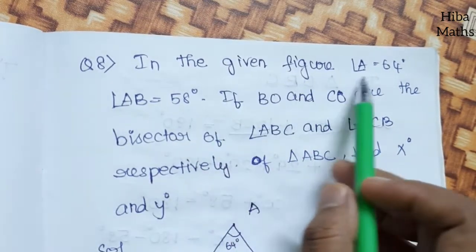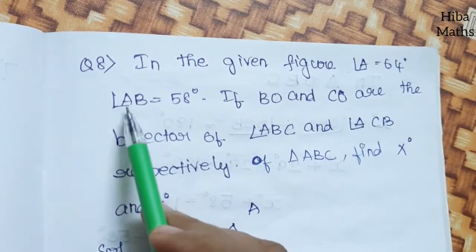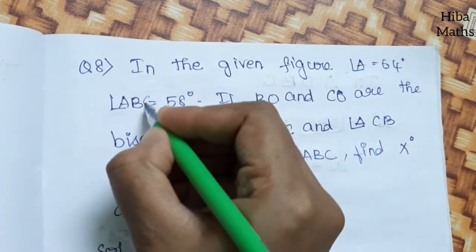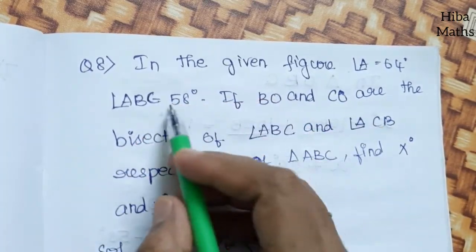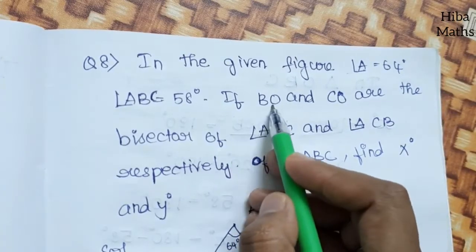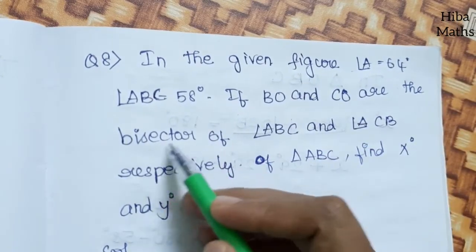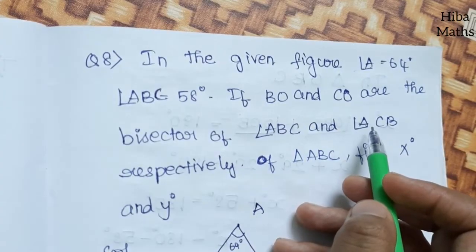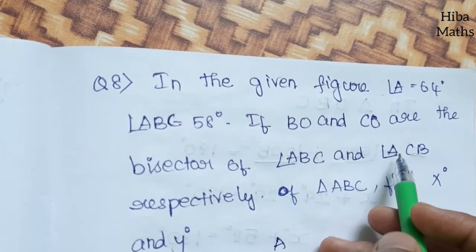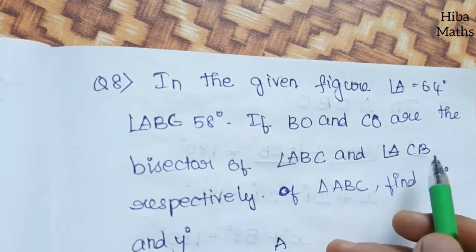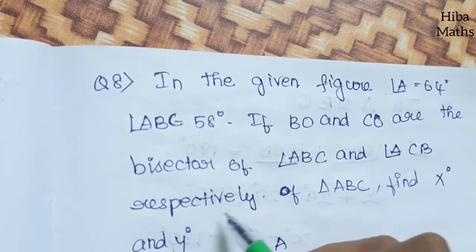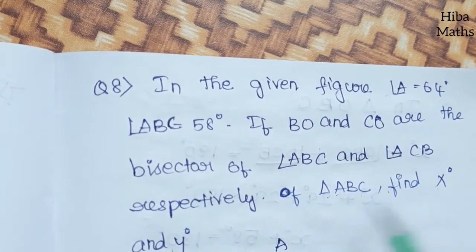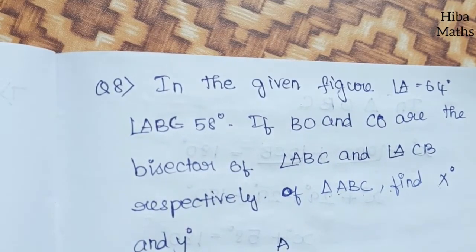In the given figure, angle A is 64 degrees and angle ABC is equal to 58 degrees. If BO and CO are the bisectors of angle ABC and angle ACB respectively, of triangle ABC, find angle X and angle Y.